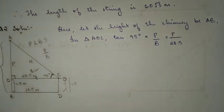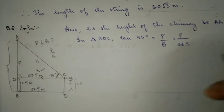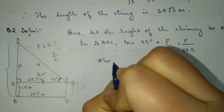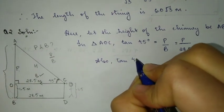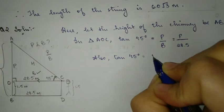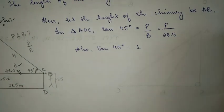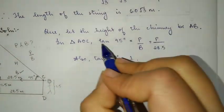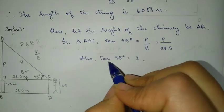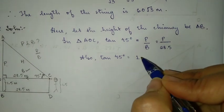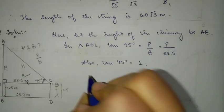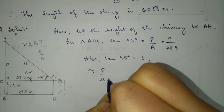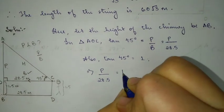We already know from the table that tan 45 degrees is one. If tan 45 and tan 45 are the same, then their right-hand side will also be the same. That means P by 28.5 and one will be equal to each other. Therefore, this implies P by 28.5 is equal to one.